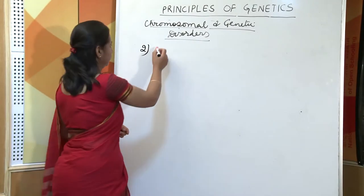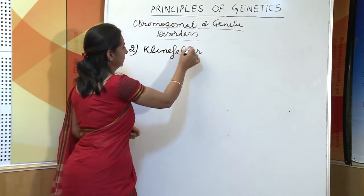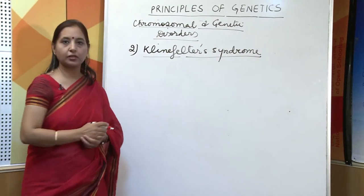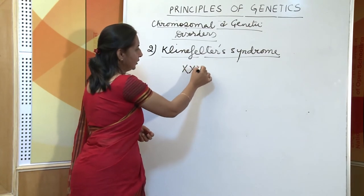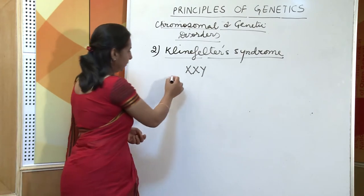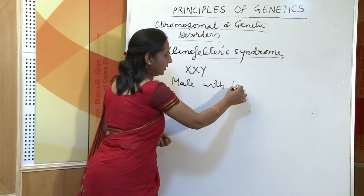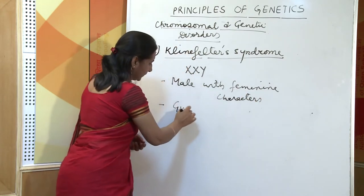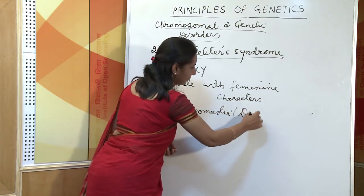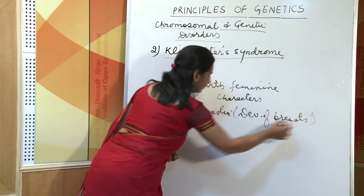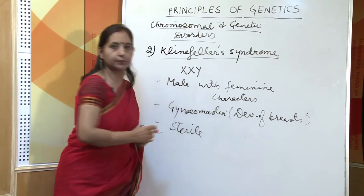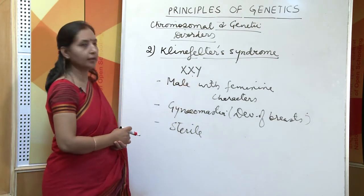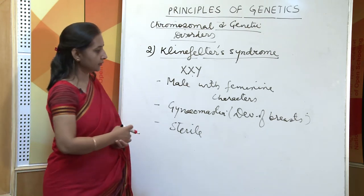The next disorder is Klinefelter syndrome. In this disorder, there is an extra chromosome, and the genotype becomes XXY instead of XY. The individual is a male with feminine characters. There is gynecomastia, that is development of breasts, and such males are sterile — they are not able to reproduce. Due to the extra chromosome making the genotype XXY, there is Klinefelter syndrome, wherein the male has feminine characters and is sterile.